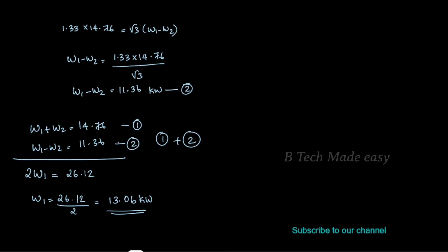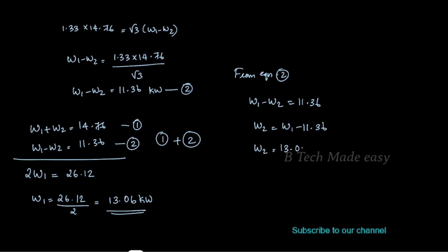From equation 2, W1 minus W2 equals 11.36, so W2 equals W1 minus 11.36, which is 13.06 minus 11.36. Therefore W2 equals 1.699 kW. So the two wattmeter readings are W1 equals 13.06 kW and W2 equals 1.699 kW.